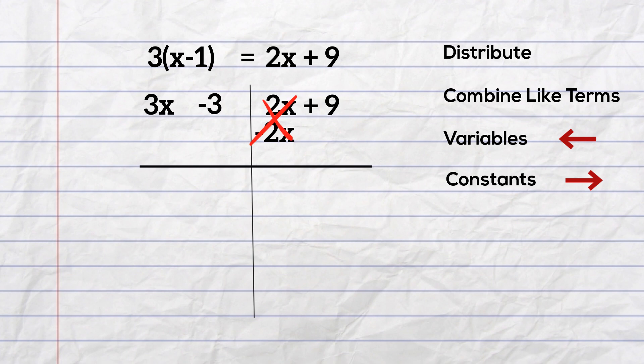What I do on the right side of the equation, I need to complete on the left. So I will subtract 2x on the left. That gives me x minus 3 equals 9.